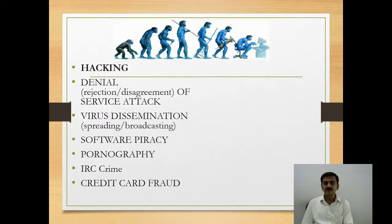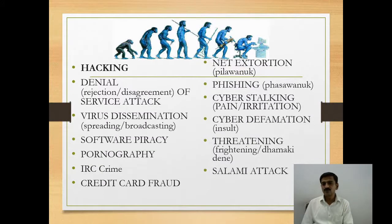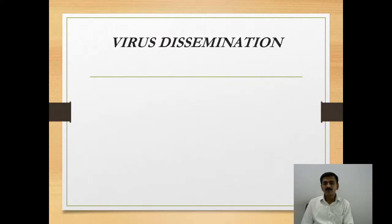Now we focus on the different types of cybercrime. The different categories include: hacking, denial of service attack, virus dissemination, software piracy, pornography, IRC crime, credit card fraud, net extortion, phishing, cyberstalking, cyber defamation, threatening, and salami attack. We will now focus on each of these cybercrimes one by one.